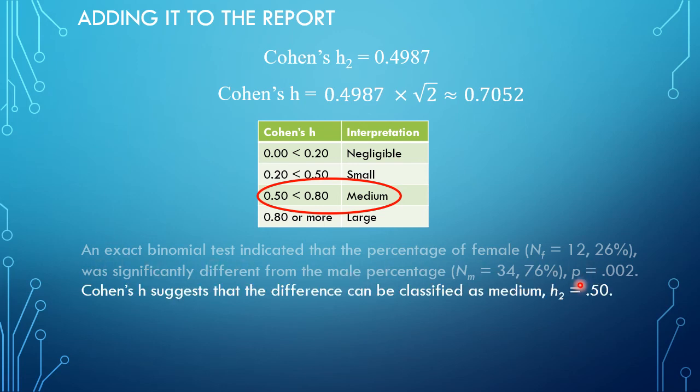We already had the binomial test results, and then we simply add to that: Cohen's H suggests that the difference can be classified as medium. H2 was 0.5—I usually round it to two decimal places. All right, and that was it for Cohen's H2. Hope this was helpful, and thank you for watching.